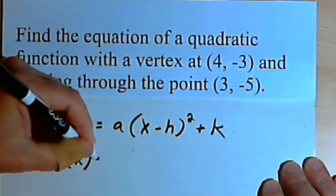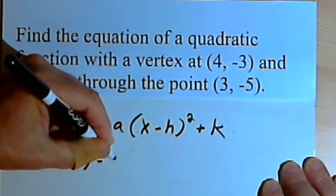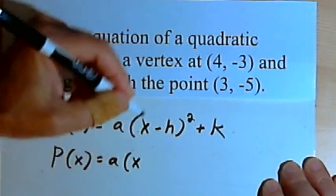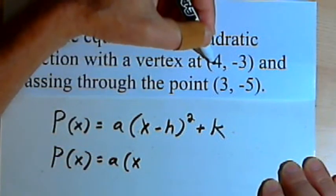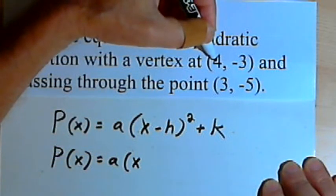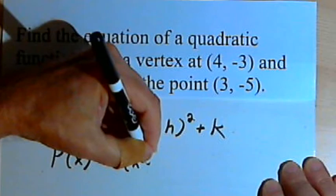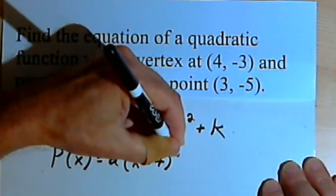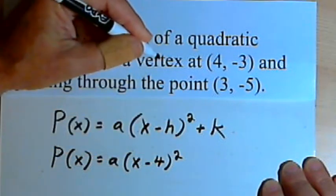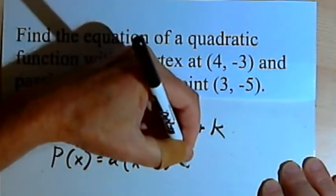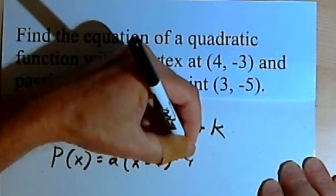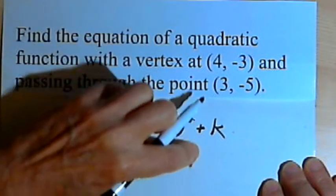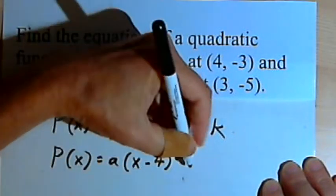I'm going to have p of x equals a times x, and the x-coordinate is 4, so it's x minus 4 squared plus k, and k was negative 3, so that would be minus 3.